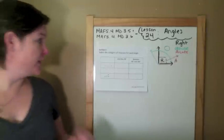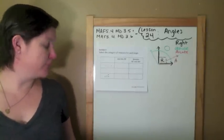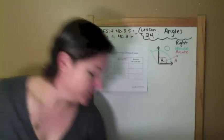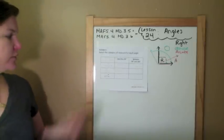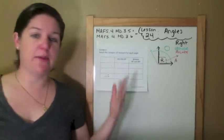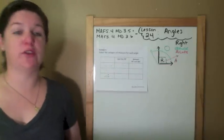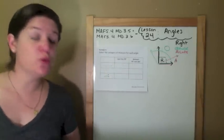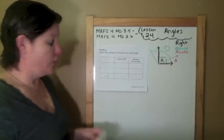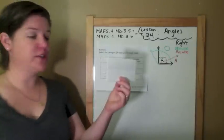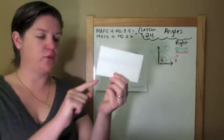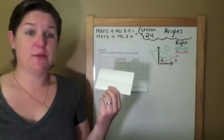Okay, example three. Select the category of measure for each angle. So I'm seeing a bunch of angles right here, and I need to classify them as being less than a right angle, which would be acute, or between 90 and 180 degrees, which would be obtuse. So you need a square corner. I just have this little piece of paper. It has a square edge. You just need a piece of paper too.